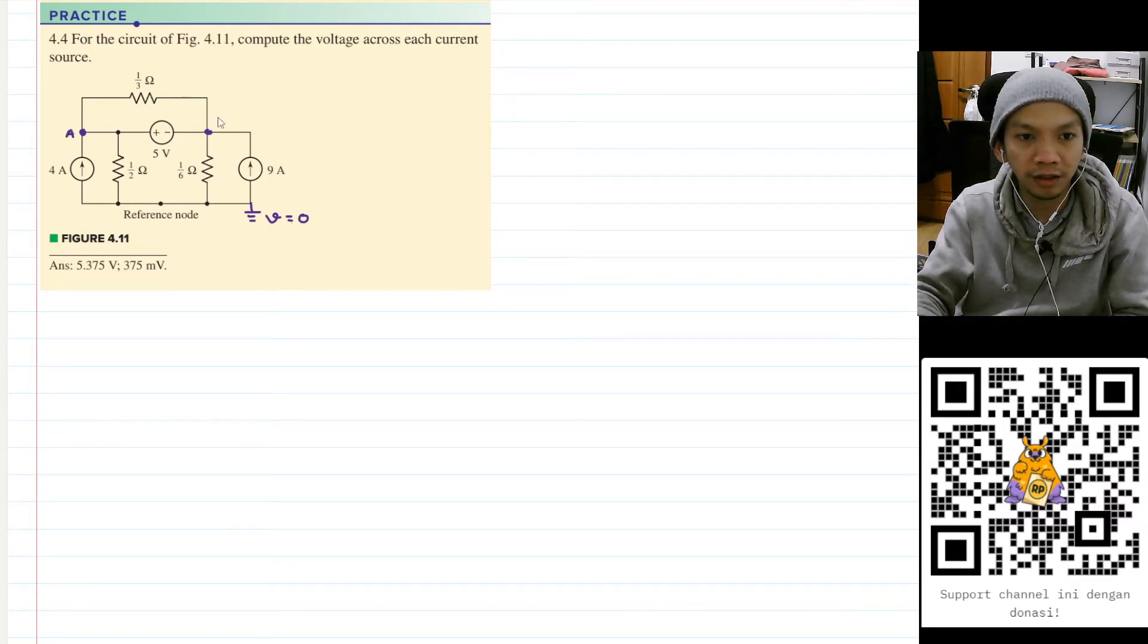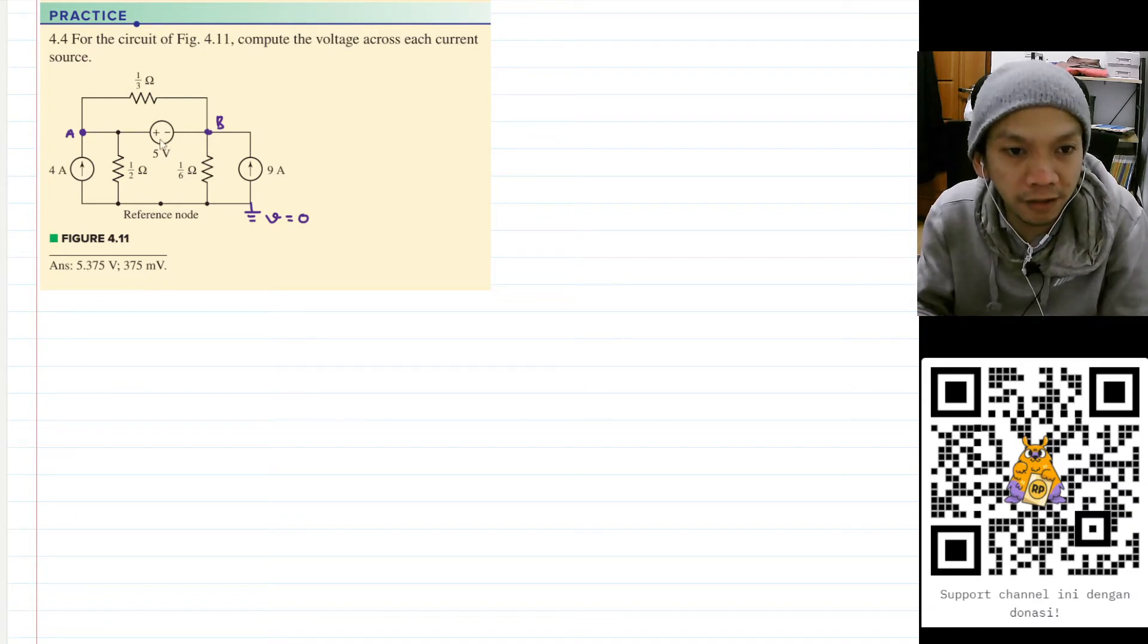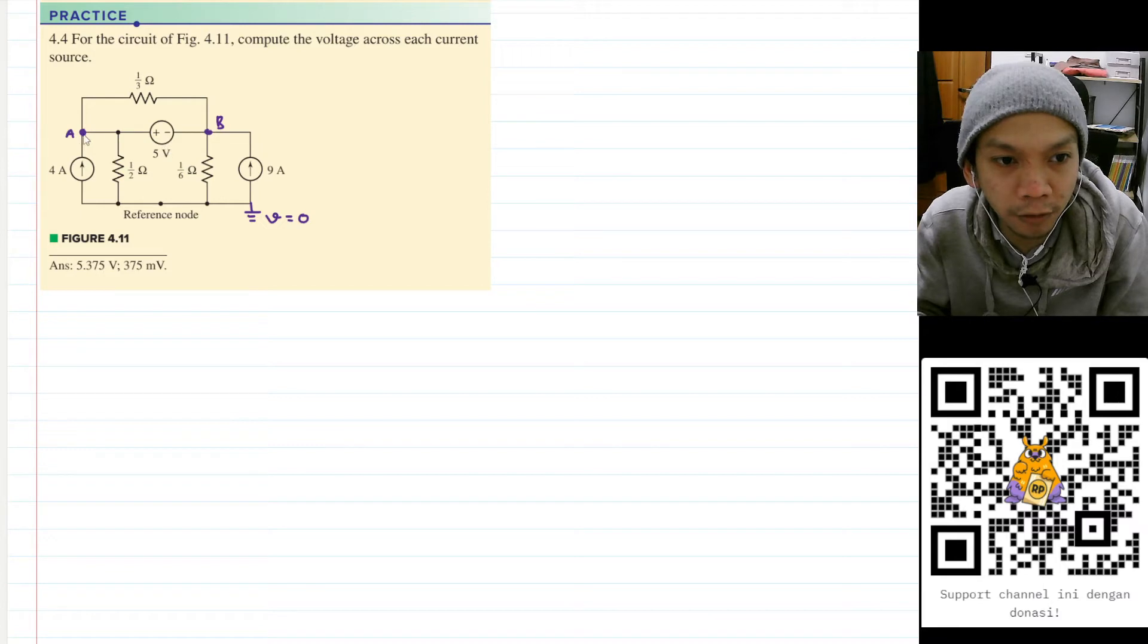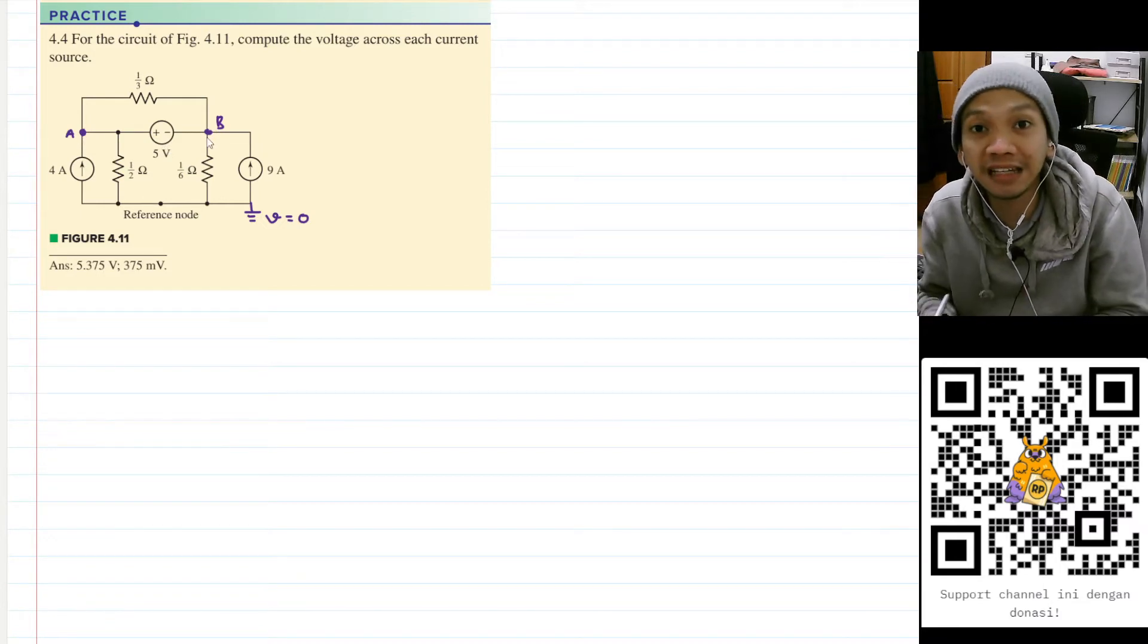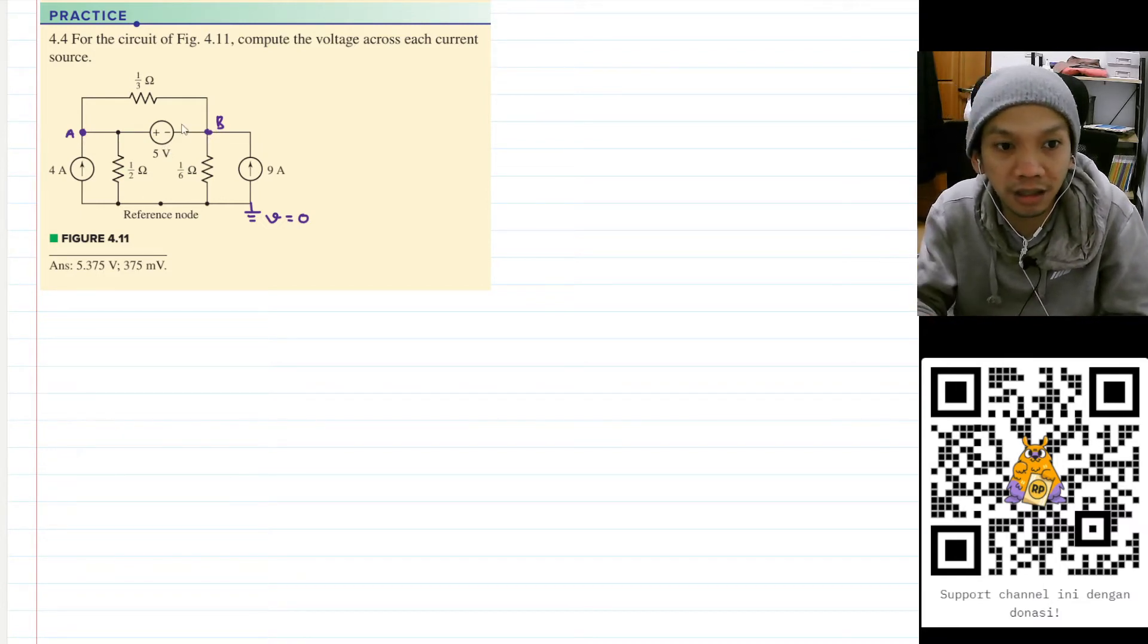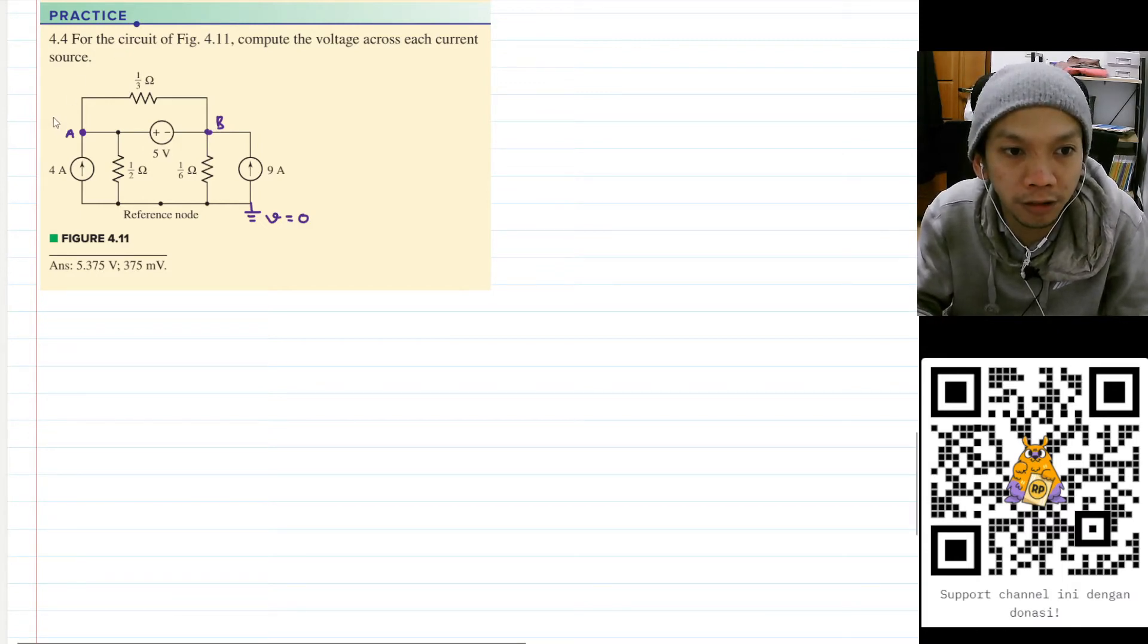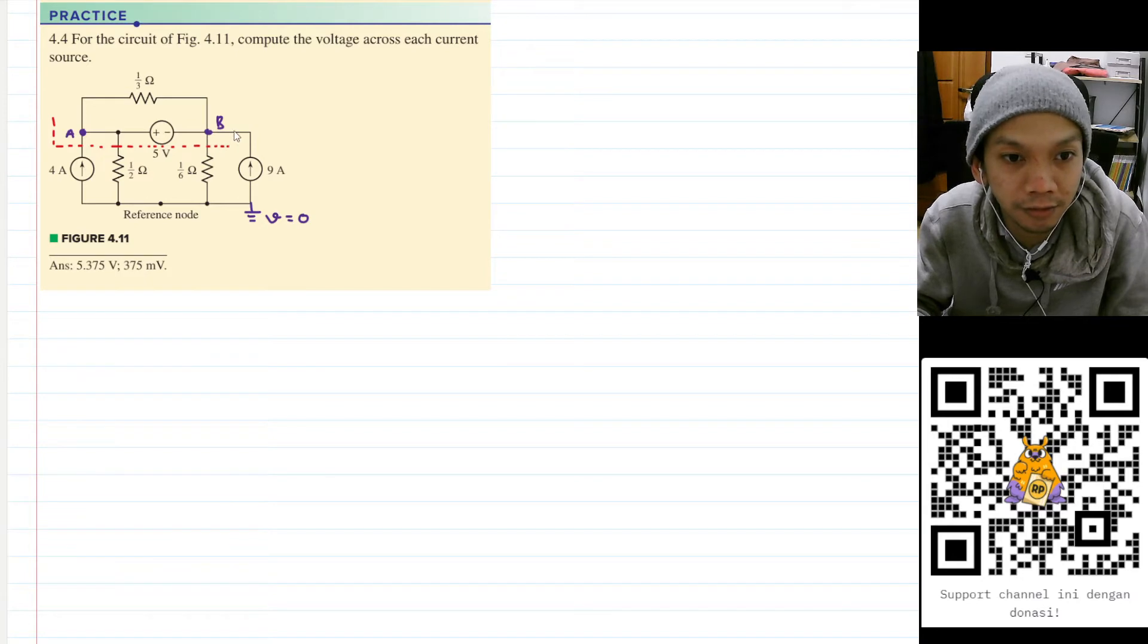And this node as node B. And for your information, this is also node A because this is directly connected. Okay, we have this 5 volt voltage source across node A and node B, and there is no way that we can know the current that passed through this one, so we need to use super node between node A and node B.